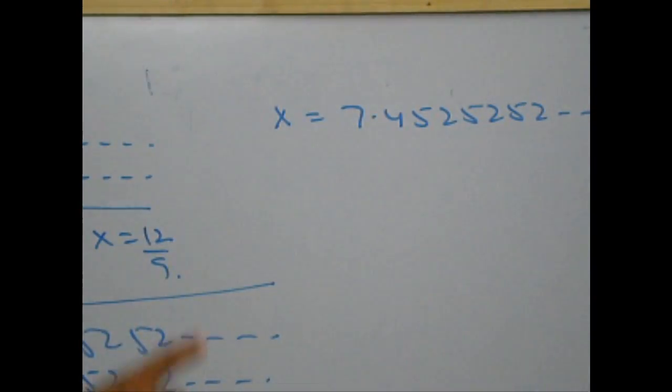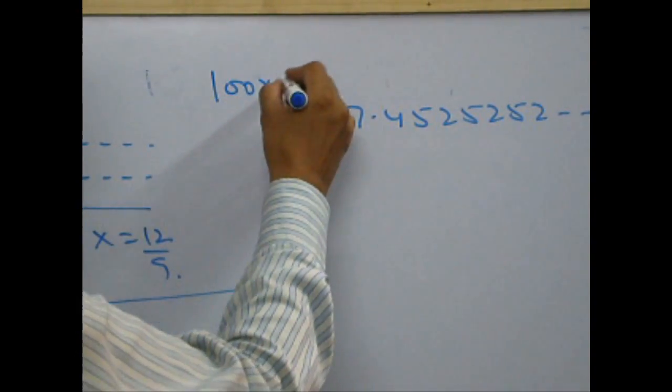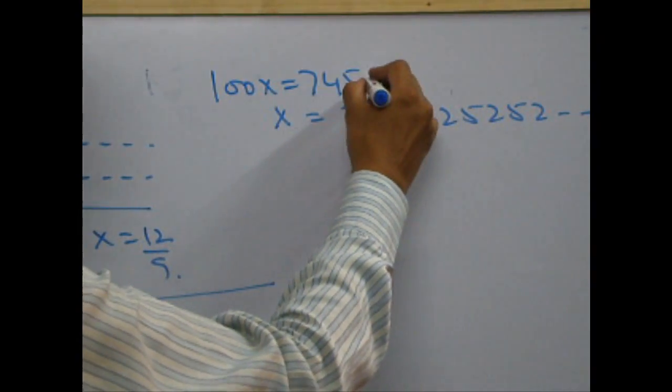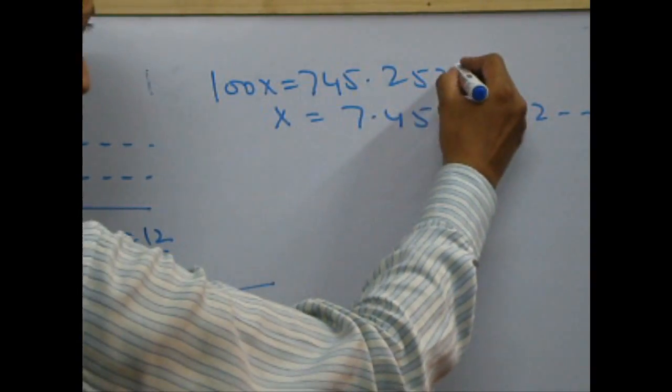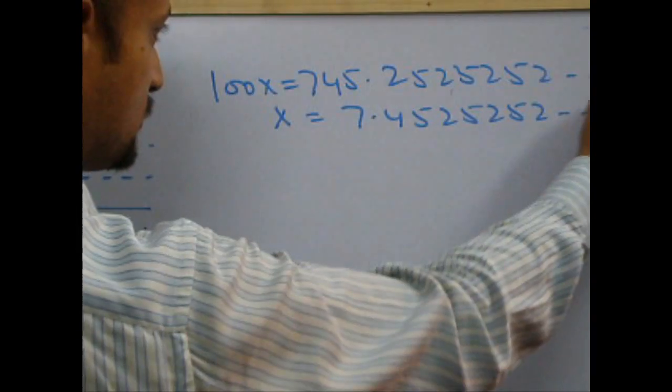So, multiply x by what? Since, again two digits are repeating, I will again multiply x by two zeros. Therefore, getting 100x. 100x is 745.252525252 and so on.